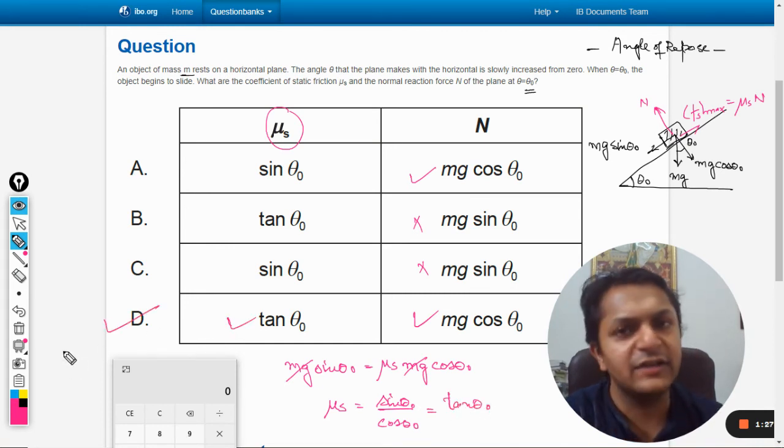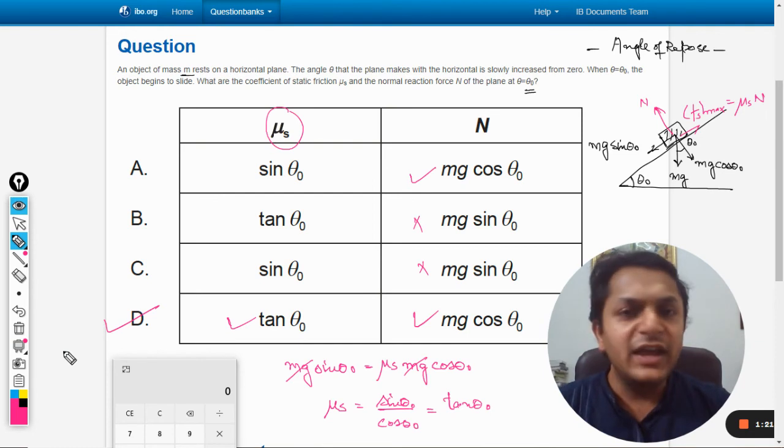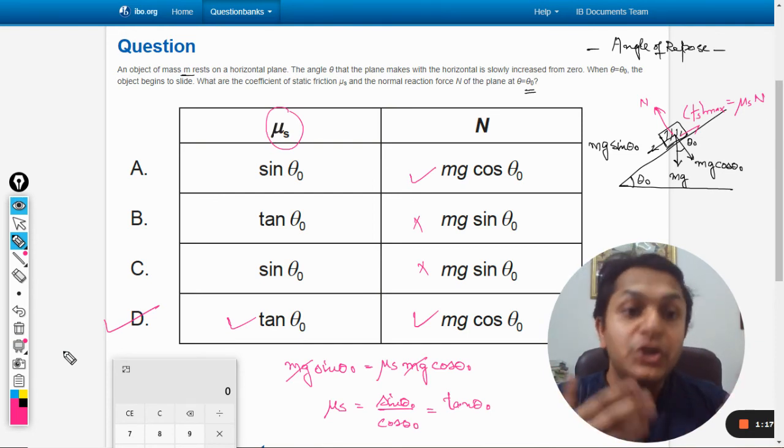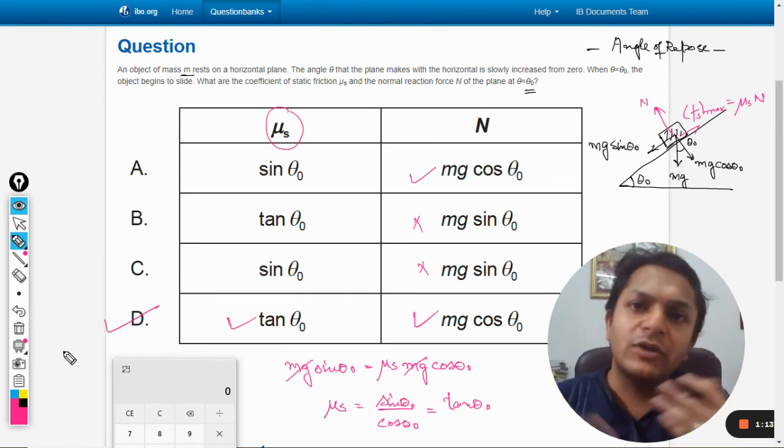So D is the answer. As a matter of theory, I must say that this is what we can easily remember as a part of theory itself. If you knew this theory, we could have picked the answer without even solving anything.